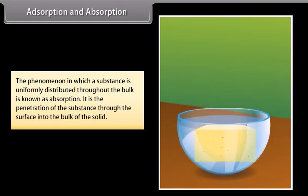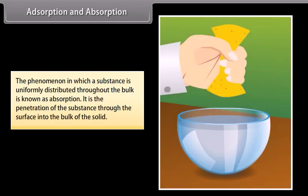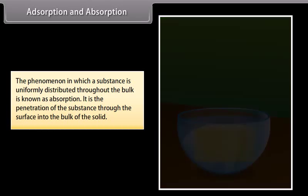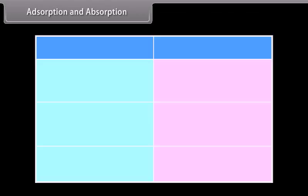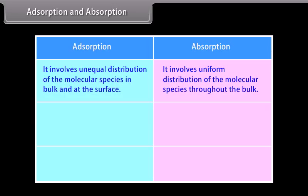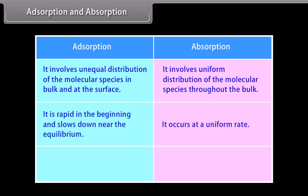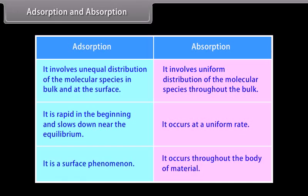The phenomenon in which a substance is uniformly distributed throughout the bulk is known as absorption — it is the penetration of the substance through the surface into the bulk of the solid. For example, when a sponge is dipped in a liquid, it absorbs some molecules of liquid. Key differences: adsorption involves unequal distribution at the surface whereas absorption involves uniform distribution throughout the bulk; adsorption is rapid at first and slows near equilibrium whereas absorption occurs at a uniform rate; adsorption is a surface phenomenon whereas absorption occurs throughout the body of the material.